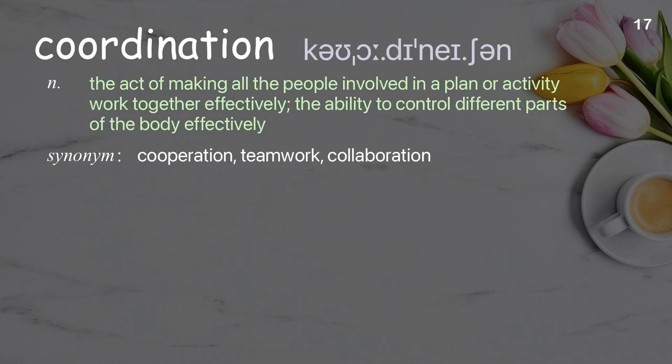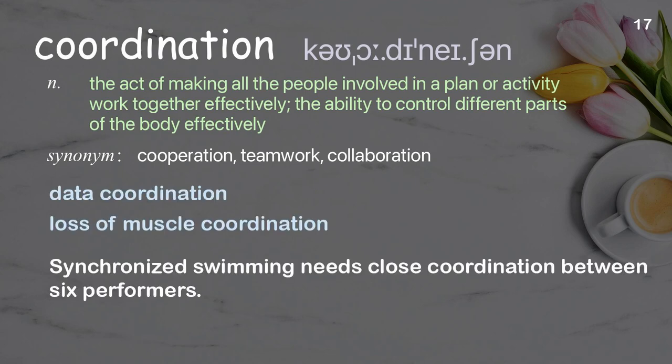Coordination: the act of making all the people involved in a plan or activity work together effectively; the ability to control different parts of the body effectively. Examples: data coordination; loss of muscle coordination. Synchronized swimming needs close coordination between six performers.